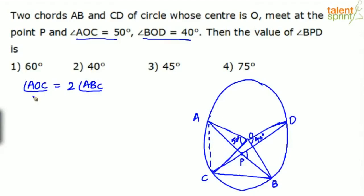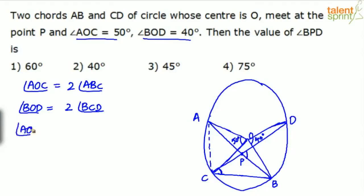Similarly, angle BOD — which is 40 degrees — can be taken as twice the angle BCD. So if you observe, angle AOC plus angle BOD equals 2 times the quantity angle ABC plus angle BCD.